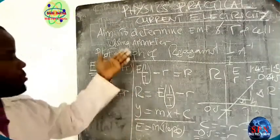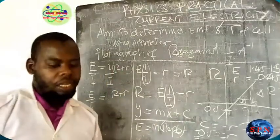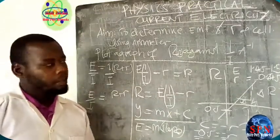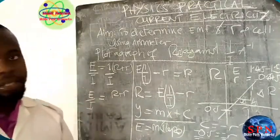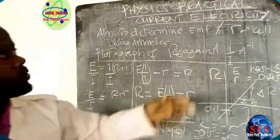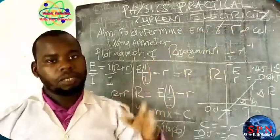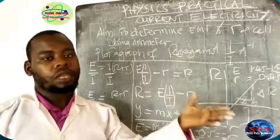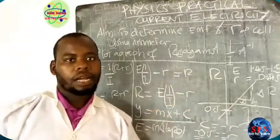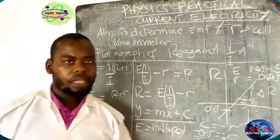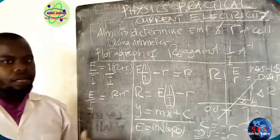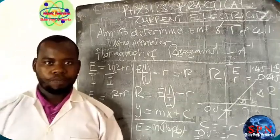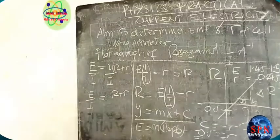By using the ammeter, you have to understand and will be able to know the EMF of the cell and the internal resistance of the cell. When you join two cells to make a battery, it means the values double: EMF will be 3 V and the internal resistance will be 1 Ω. I think for today we end here. Thank you.